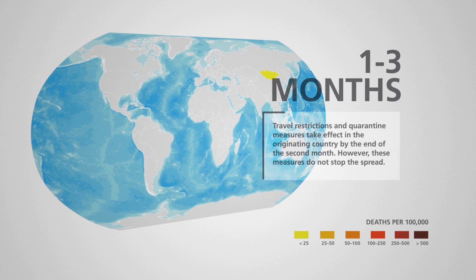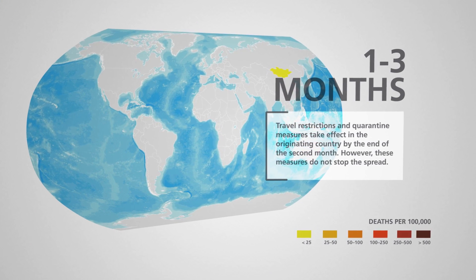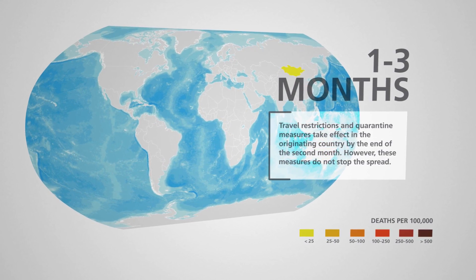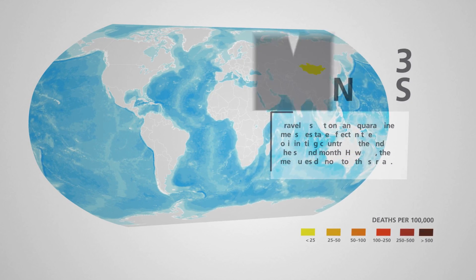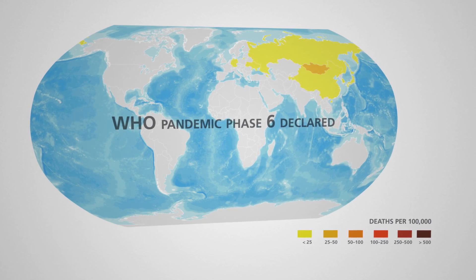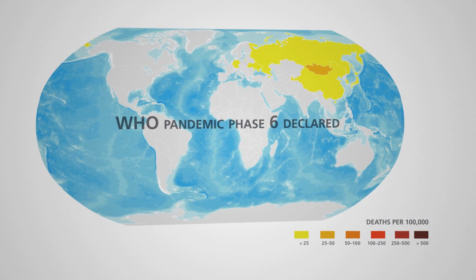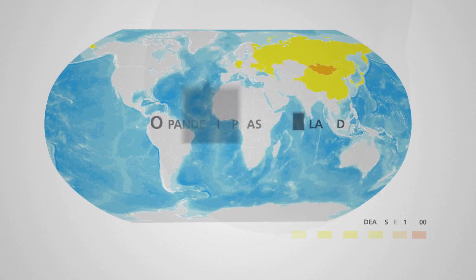Travel restrictions and quarantine measures take effect in the originating country by the end of the second month. However, these actions are not effective in preventing the rapid spread of the pandemic. The World Health Organization declares a pandemic phase six in the fourth month, indicating a global pandemic.